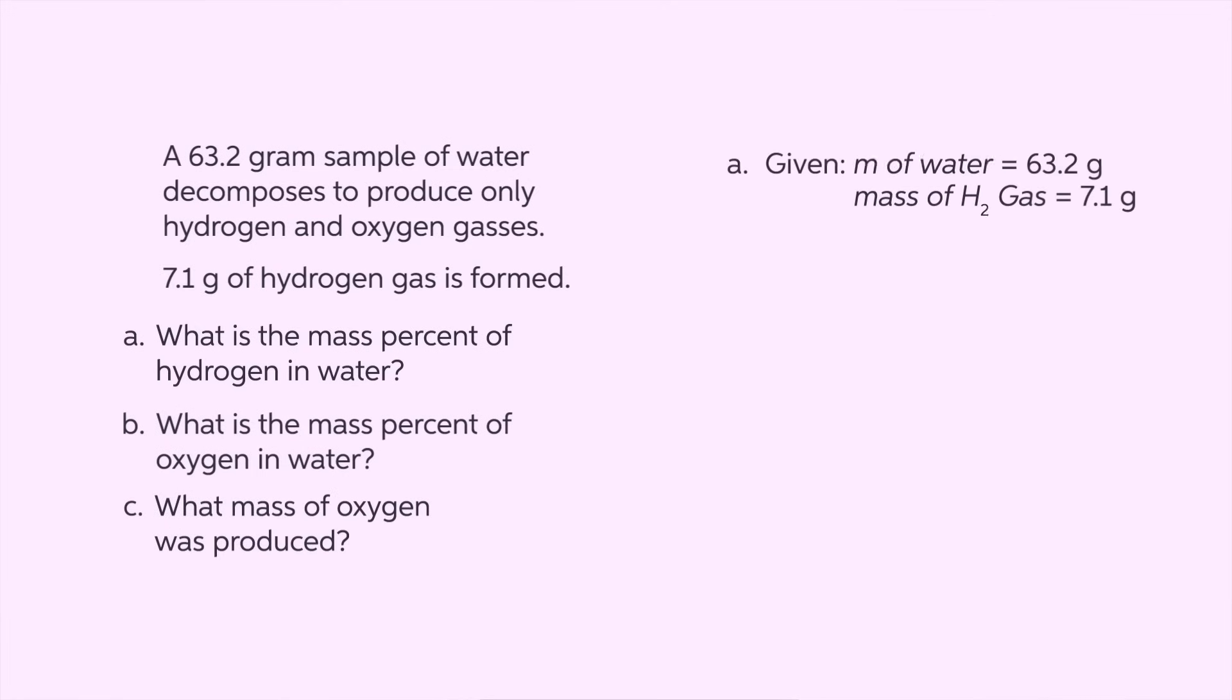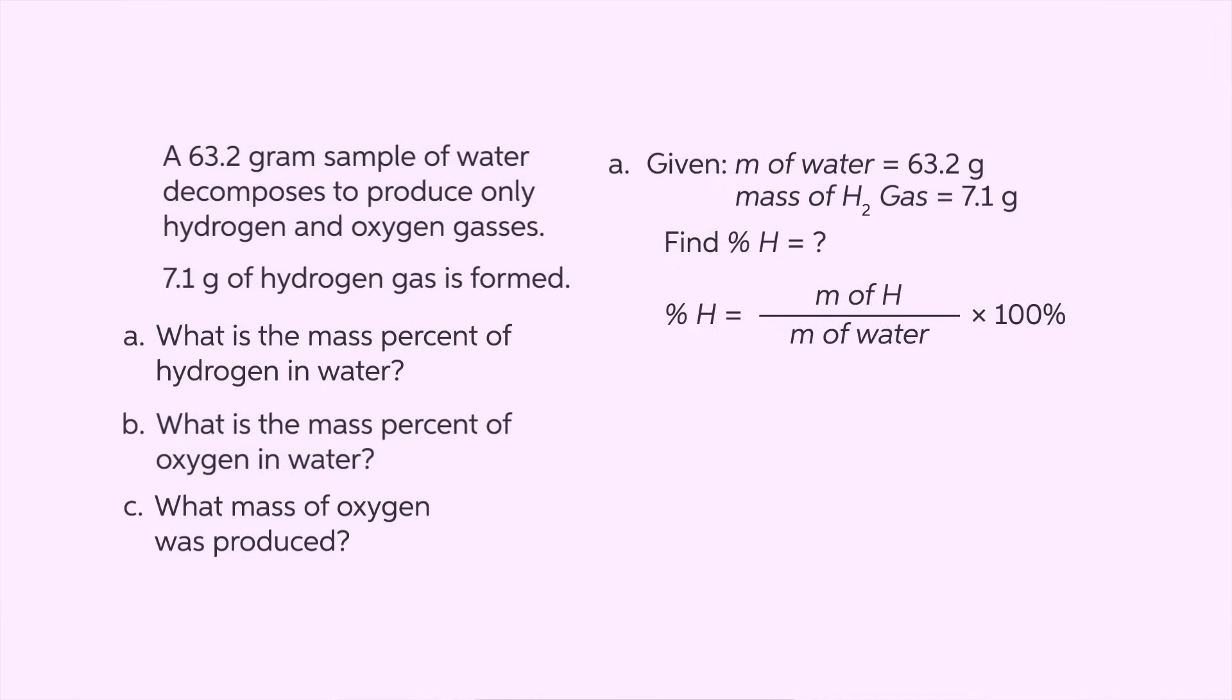For the first part, we are given that the mass of water is 63.2 grams and the mass of hydrogen gas produced is 7.1 grams. Using the mass percent formula, we divide the mass of hydrogen by that of water, which is 7.1 grams over 63.2 grams.